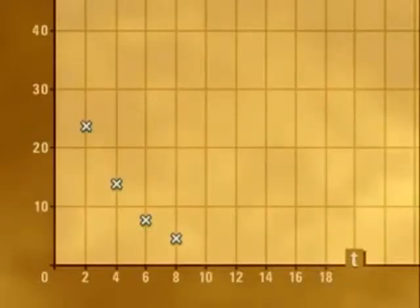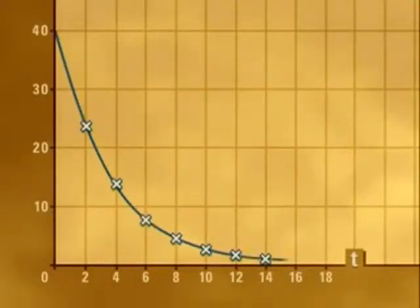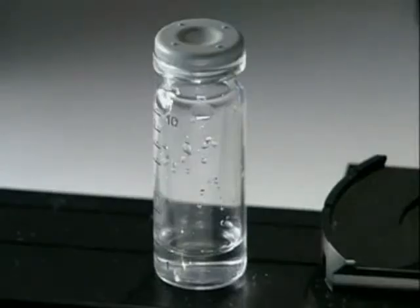Plotting a graph of count rate against time produces a smooth curve. The activity falls to half its original value in just two and a half minutes. It falls by half again two and a half minutes later. So the half-life of barium-137M must be two and a half minutes.